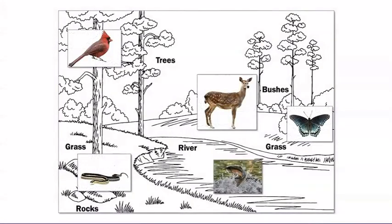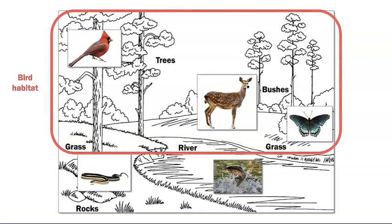Let's try to understand each organism's habitat a little better. We'll start with this red bird called a cardinal. What components of the larger forest environment are part of the bird's habitat? The bird's habitat stretches from the top of the trees all the way down to the ground, where the bird might eat insects or worms.